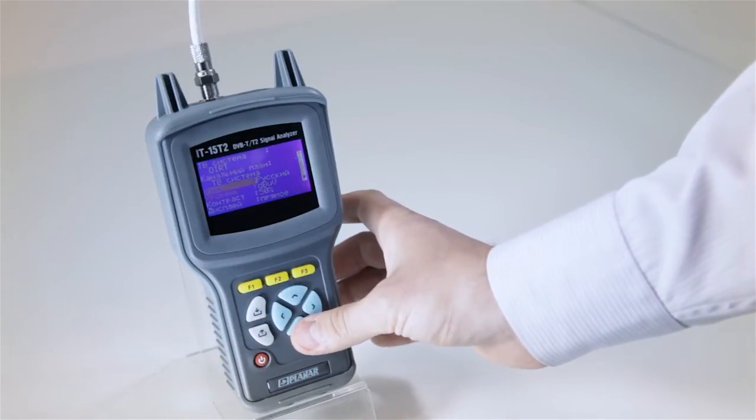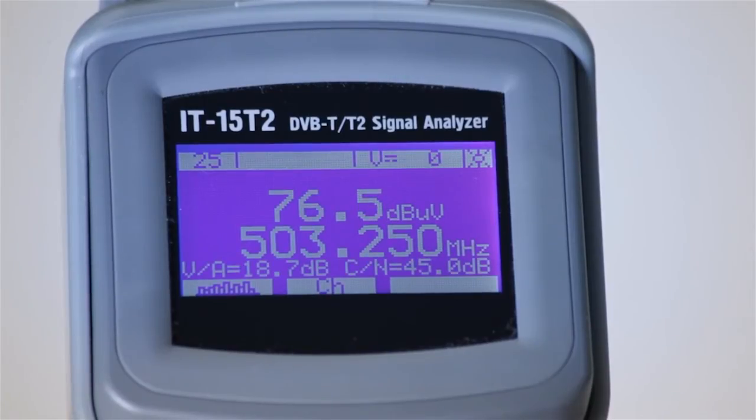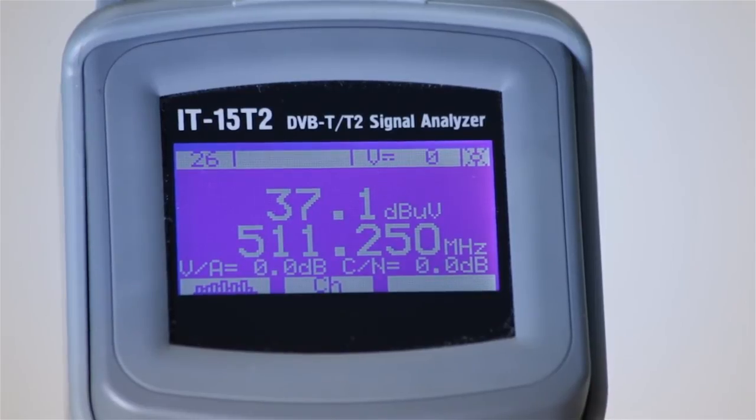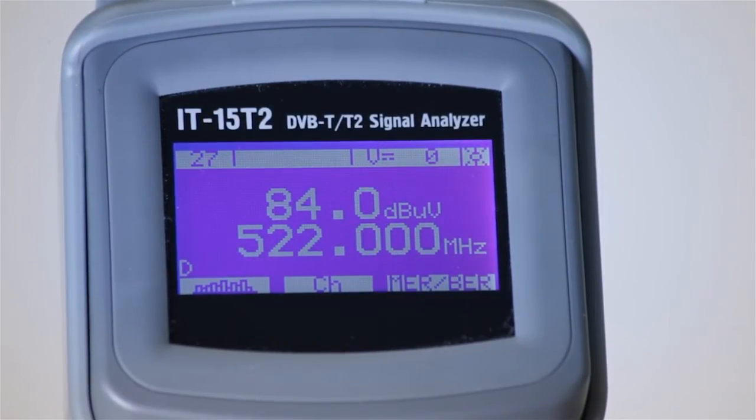Tuning can be performed either by channel or by frequency with level measurement in frequency points. The instrument can also optionally provide audio indication of the signal level. From the sound, you can check the channel level without looking at the screen.